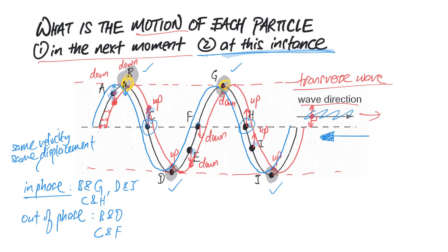For B, it will still be coming down because it's at the highest point. C will be going down; D will be going up; E will be going up; F will be going up; G will be going down; H will be going down; I will be going down; and J will be going up. So there is a difference depending on whether the wave moves to the right or left — read the question carefully.